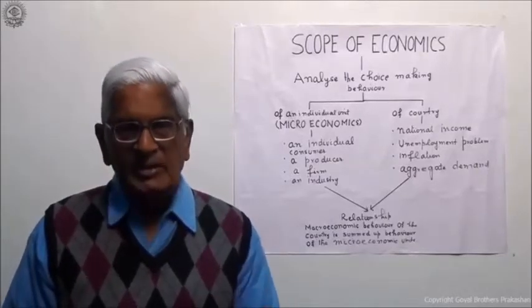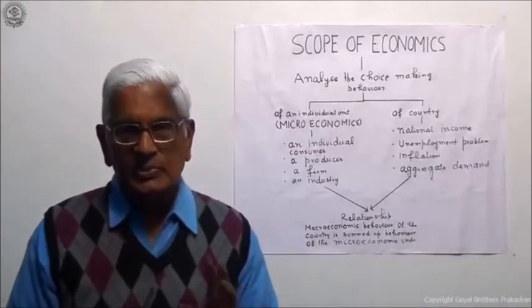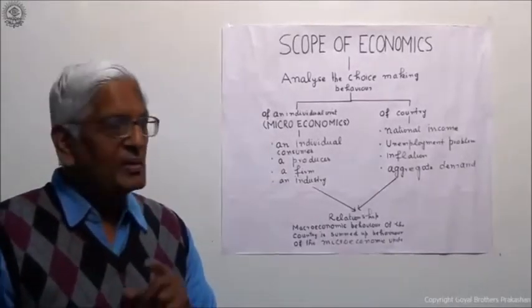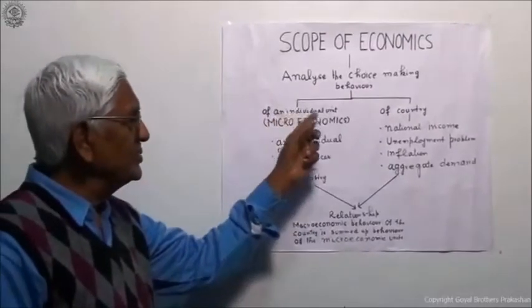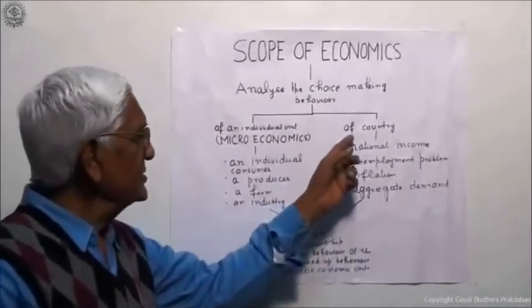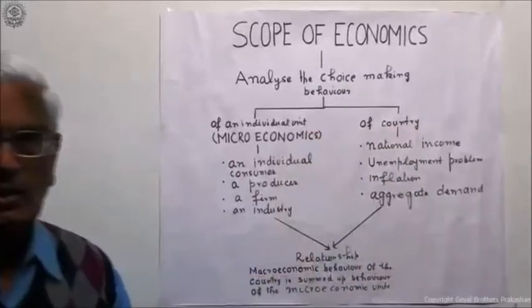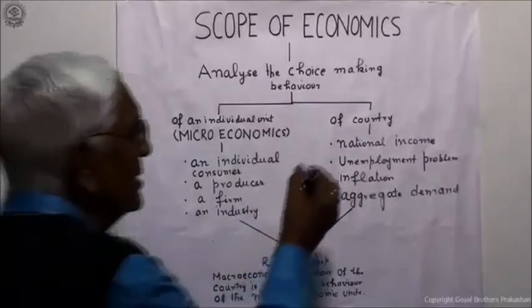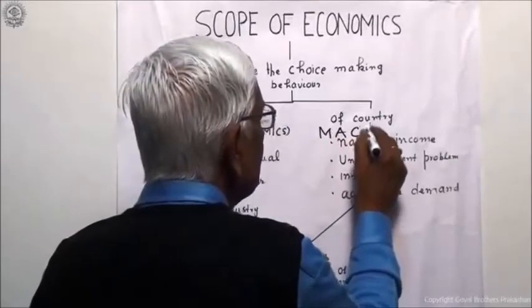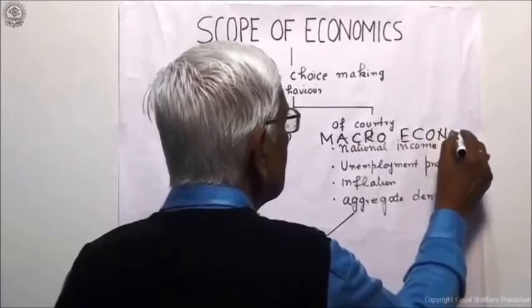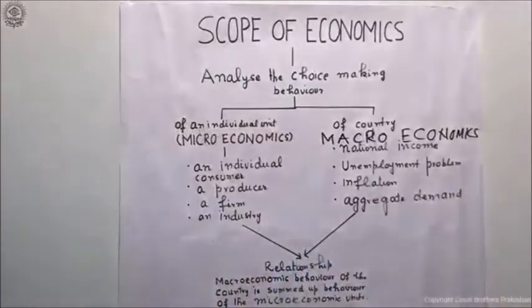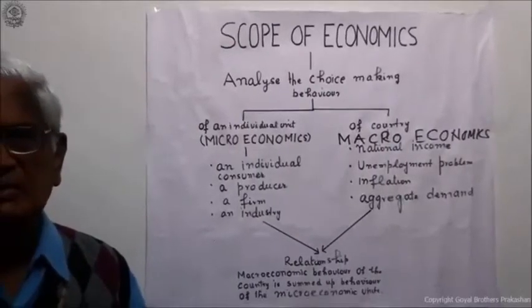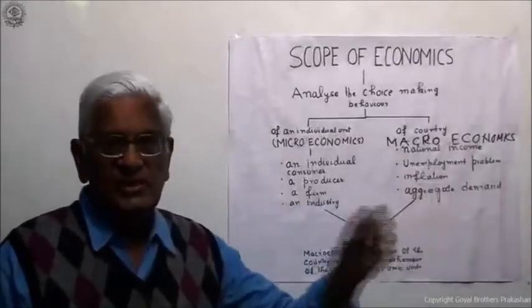Broadly, economics is divided into two parts: microeconomics and macroeconomics. Microeconomics is the study of an individual unit, while macroeconomics is the study of the nation or country as a whole. In class 10, micro and macro simply mean small and large, but in economics they have a specific meaning.